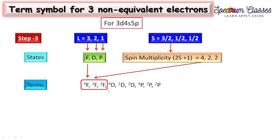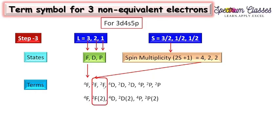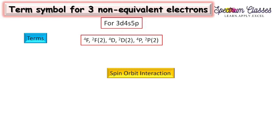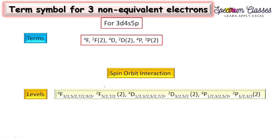In some books this is written more compactly: 4F, 2F (written as (2)2F indicating two occurrences), and similarly (2)2D and (2)2P. Now considering spin-orbit interaction to determine levels: 4F will have J values of 3/2, 5/2, 7/2, and 9/2 — four J values.